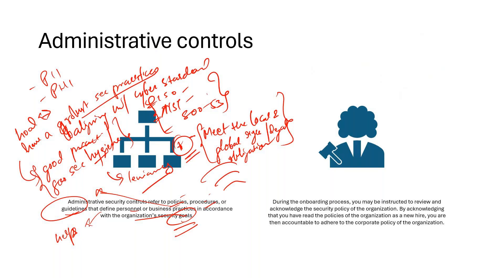Once you start implementing those controls across the organization, make sure that the respective teams are aware of them and are properly trained. This is really important because if they are not trained and not aware, your security controls will not be operating effectively, since they are the ones operating on a day-to-day basis and owning those security controls.